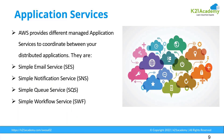AWS provides different managed application services to coordinate between your distributed applications. We do not work in an environment where everything is on a single system. We always have a distributed and decoupled environment, which is easier to manage, easier to scale, and easier to rectify. These are the benefits of distributed applications, and that is the reason more and more people are inclined towards decoupled and distributed applications.